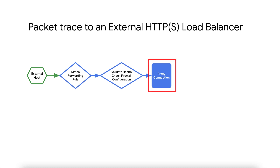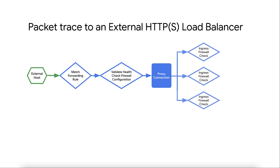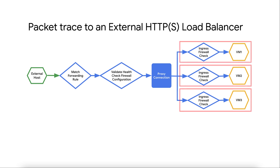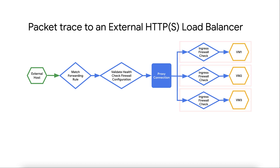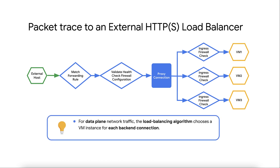The TCP connection from the external host terminates at the proxy for the external HTTPS load balancer. After this step, the external HTTPS load balancer initiates a new TCP connection to a VM acting as the load balancer's backend. In this example, the connectivity test configuration analysis has three traces, because it creates one trace for each possible path to the three load balancer backends. The connectivity test does this because it validates only configurations, not the live data plane. For the actual data plane network traffic, the load balancing algorithm chooses a VM instance for each backend connection. One of the key features of the connectivity test is that its configuration analysis supports tracing simulated packets to all types of Google Cloud load balancers.